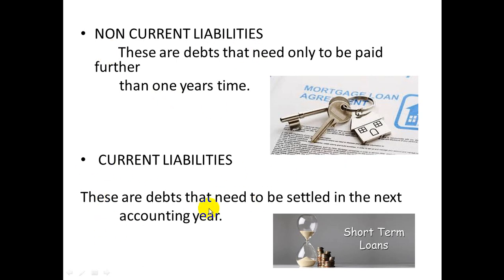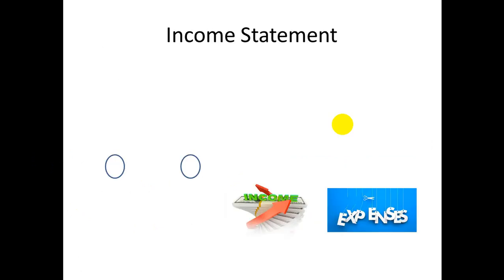Current liabilities, similar to current assets, are debts that need to be settled in the next accounting period. For example, short-term loans — say a three-month loan — have to be paid back within one year, so that's a current liability. A mortgage loan, as you can see in this picture of a house, is when you take out a loan to buy a house — you're obviously not going to pay that off within 12 months.